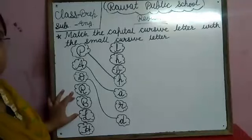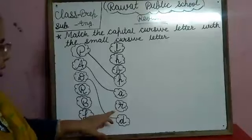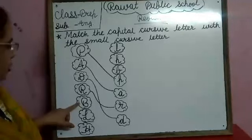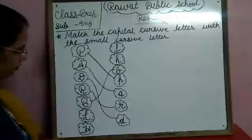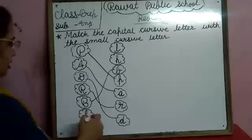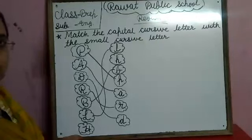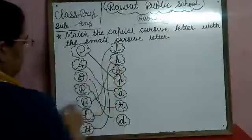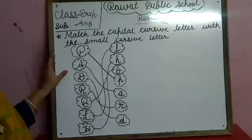Which letter is this? Capital cursive R. So match the capital cursive R with the small cursive R. Which letter is this? Capital cursive V. So match the capital cursive V with the small cursive V. Which letter is this? Capital cursive L. So match the capital cursive L with the small cursive L. Capital cursive H — so match the capital cursive H with the small cursive H. This is match the capital cursive letter with the small cursive letter.